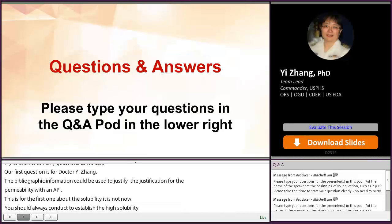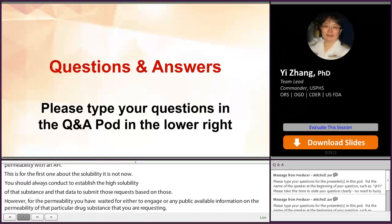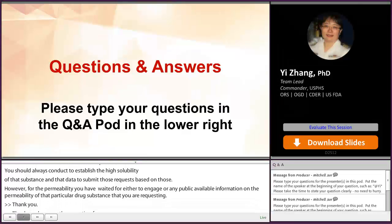However, for permeability, you may refer to either NDA information or any publicly available information on the permeability of the particular drug substance you are requesting. We have another question for you. Can the agency publish a list of BCS Class III drug products, IR dosage?